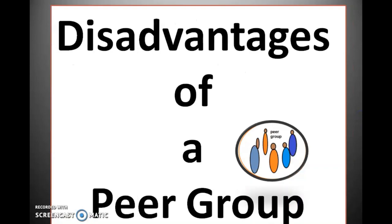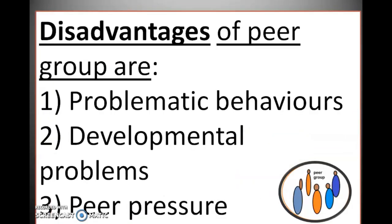We know that every coin has two sides, so formation of peer group has advantages as well as disadvantages. First, we will discuss about the disadvantages of a peer group. One of the disadvantages is problematic behavior. Suppose a group of people who do not love to mingle with the people of the society — then they develop a sort of rebellious behavior, and if you are a part of such a group, you also tend to develop such anti-social behavior.